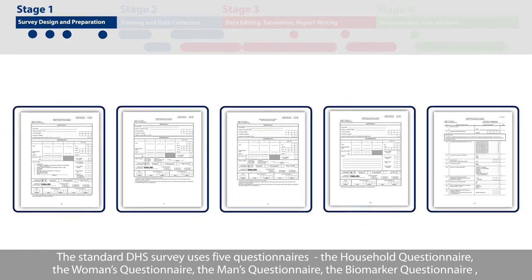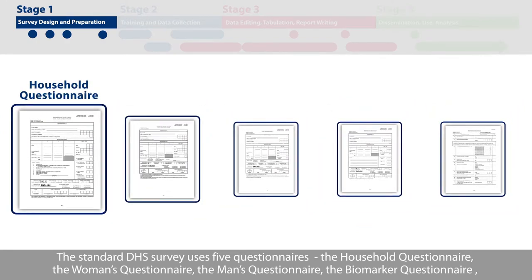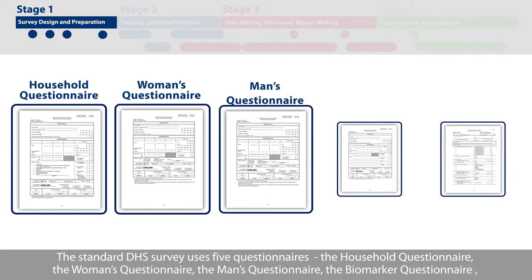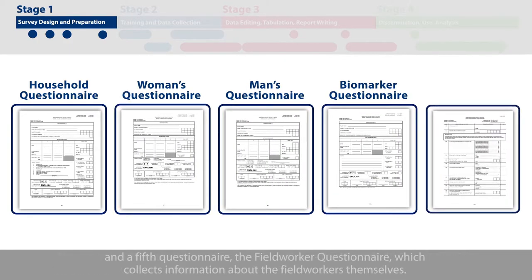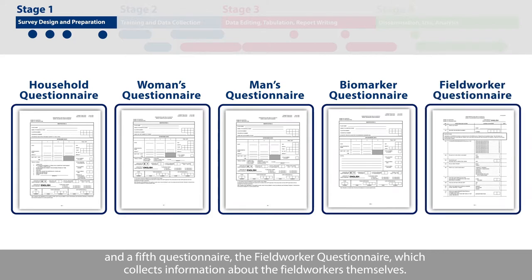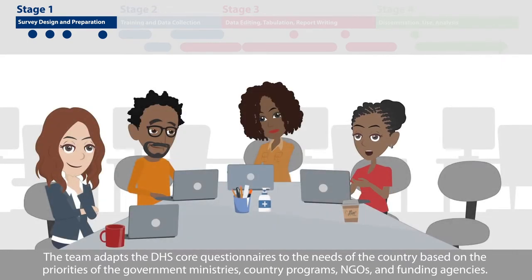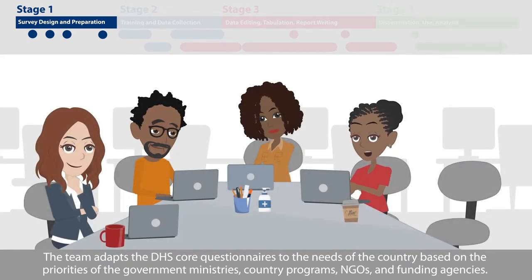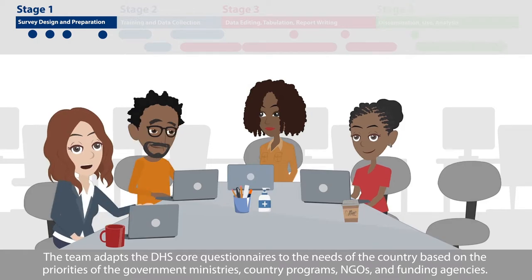The standard DHS survey uses five questionnaires: the household questionnaire, the woman's questionnaire, the man's questionnaire, the biomarker questionnaire, and a fifth questionnaire, the field worker questionnaire, which collects information about the field workers themselves. The team adapts the DHS core questionnaires to the needs of the country based on the priorities of the government ministries, country programs, NGOs, and funding agencies.